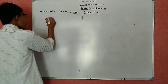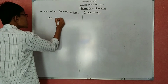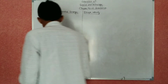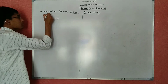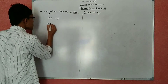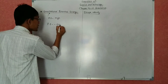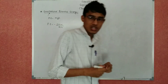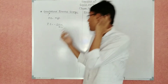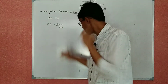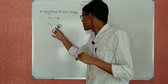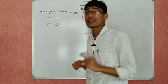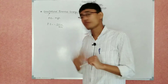Potential energy is equal to mass into acceleration due to gravity into height — that is the general formula. But in terms of gravitation, the gravitational potential energy is given as PE = −GMm/(r + h), where capital G is the universal gravitational constant, capital M is the mass of Earth, small m is the mass of the object, r is the radius of Earth, and h is the height of the object from the surface of the Earth.